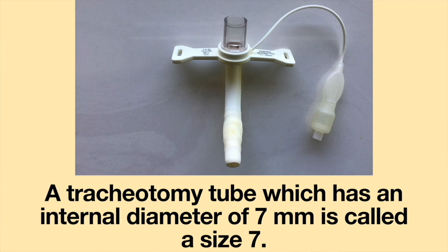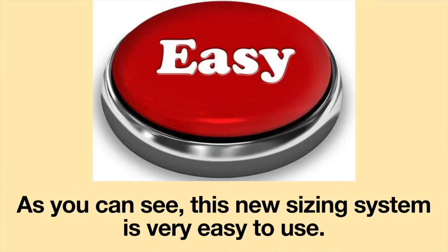A tracheostomy tube which has an internal diameter of 7 mm is called a size 7. As you can see, this new sizing system is very easy to use.